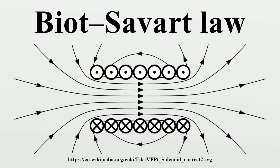In physics, specifically electromagnetism, the Biot-Savart law is an equation describing the magnetic field generated by an electric current. It relates the magnetic field to the magnitude, direction, length, and proximity of the electric current.